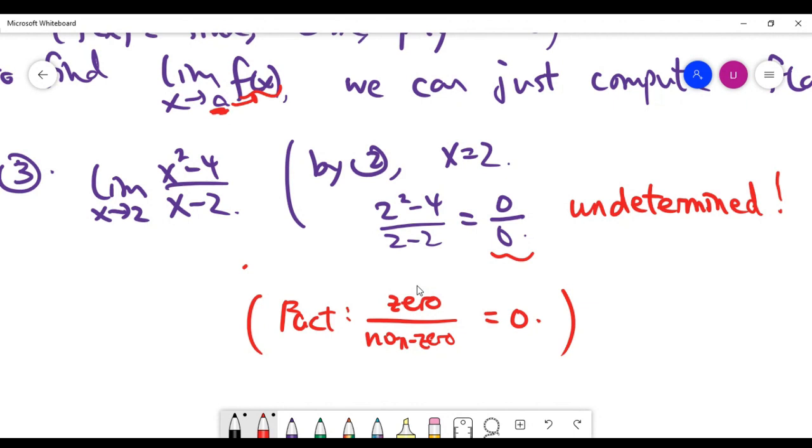And undetermined means what? Undetermined does not mean you cannot get the answer. Undetermined essentially means you can get the answer by other methods. You just don't know the answer now, so you need other methods to get the answer.